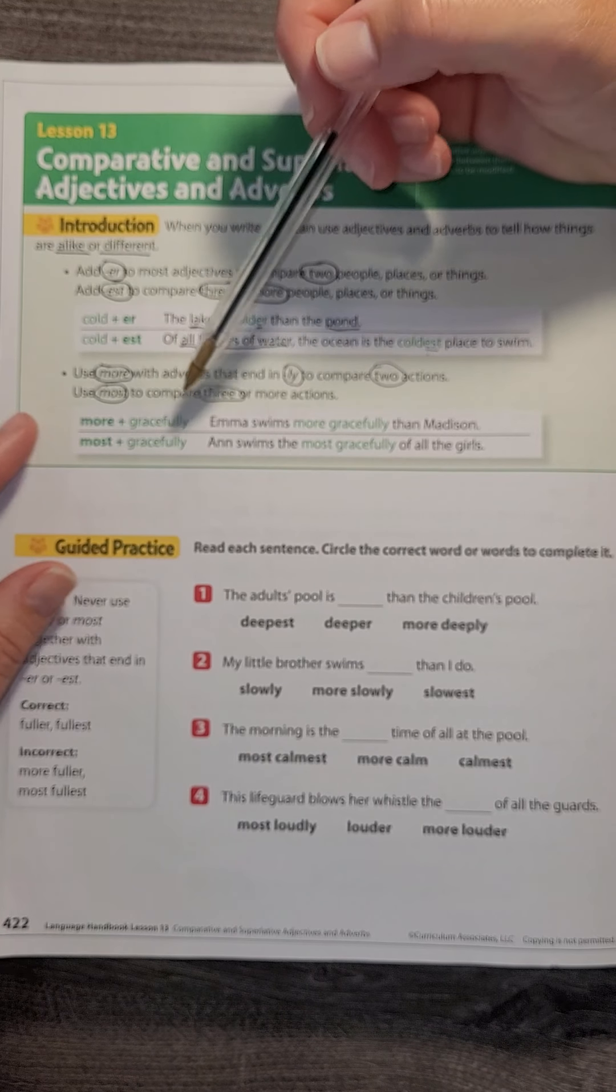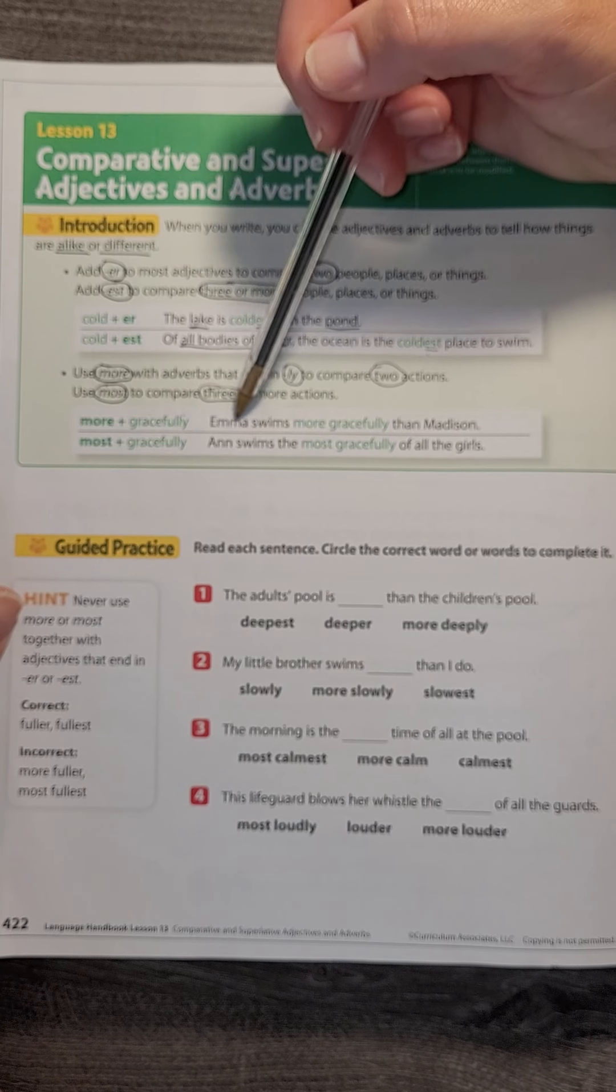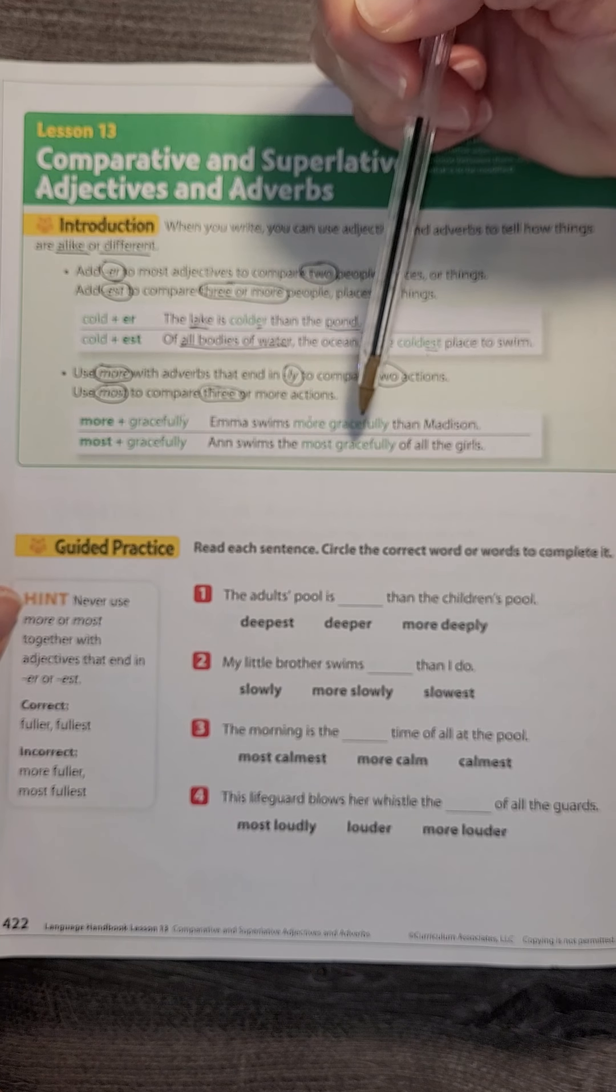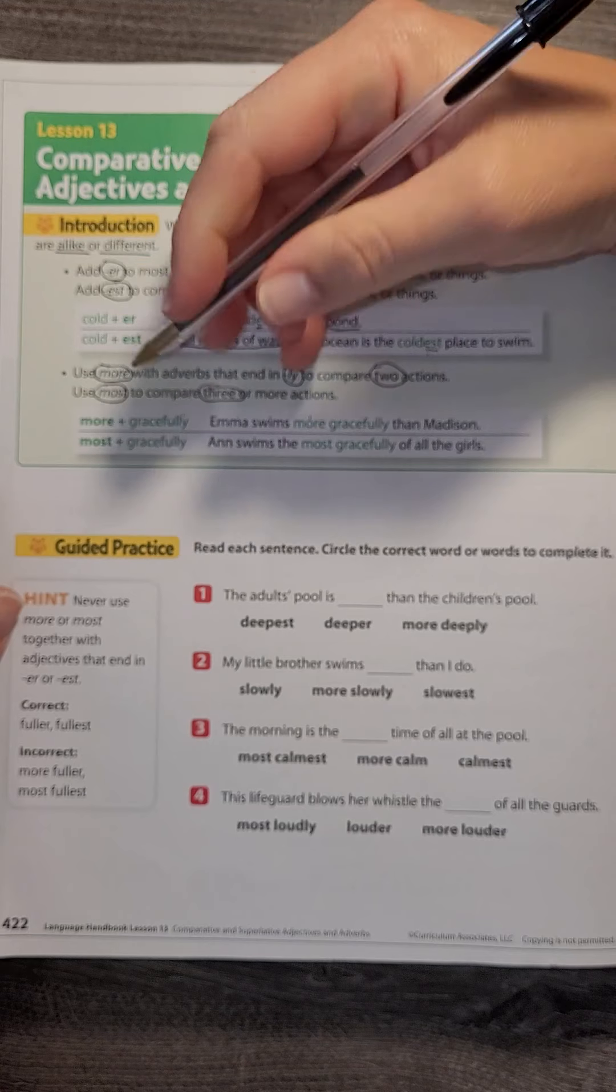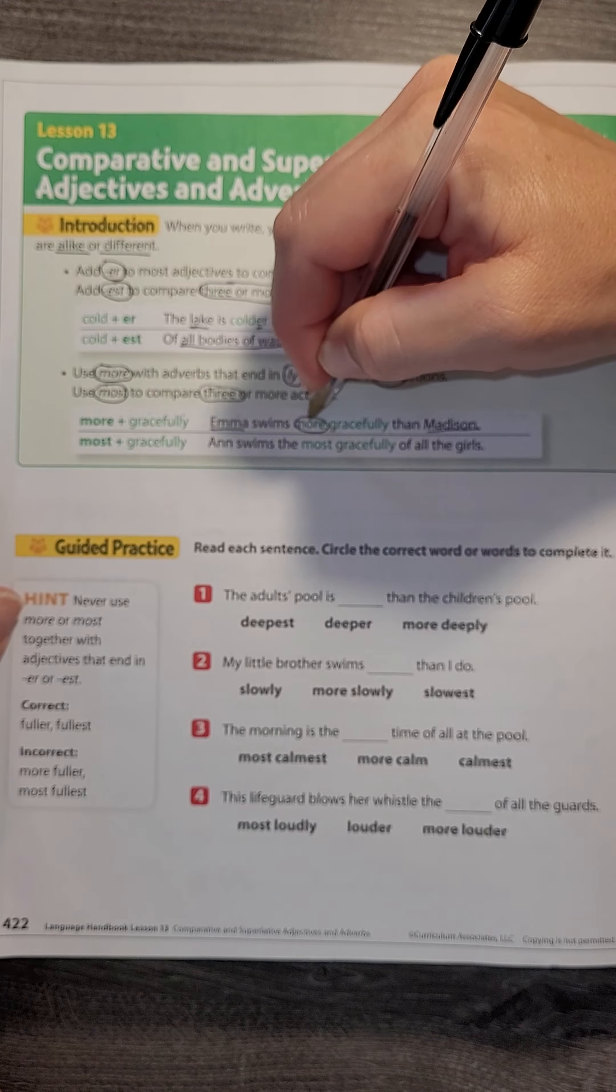So if someone does something gracefully, we would say Emma swims more gracefully than Madison. I'm comparing two people, so I say 'more.'